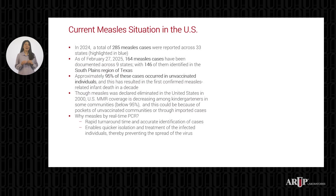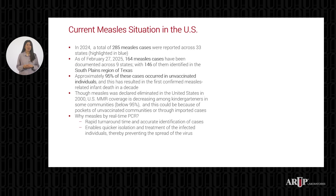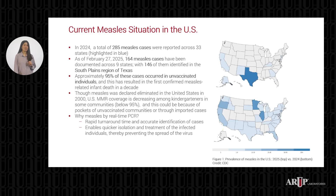Measles, as we know, is a highly contagious pathogen. It can be fatal, but is preventable with vaccination. And despite being eliminated in the United States in early 2000, measles remained a concern due to increasing number of cases in recent years. In 2024, a total of 285 measles cases were reported across multiple states, with Minnesota and Illinois reporting the highest case numbers.